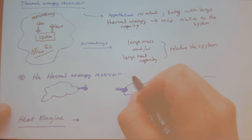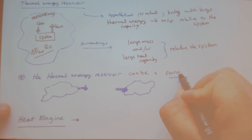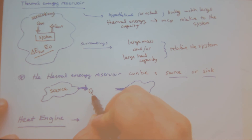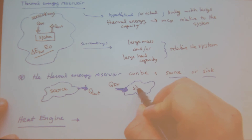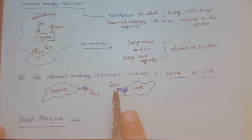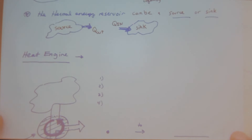My thermal energy reservoir can be a source or a sink for energy. I can have a source with heat leaving, or I could have heat in and my reservoir would be a sink. Combining the idea of a thermal energy source with a thermal energy sink — heat in and heat out — I can make a heat engine.